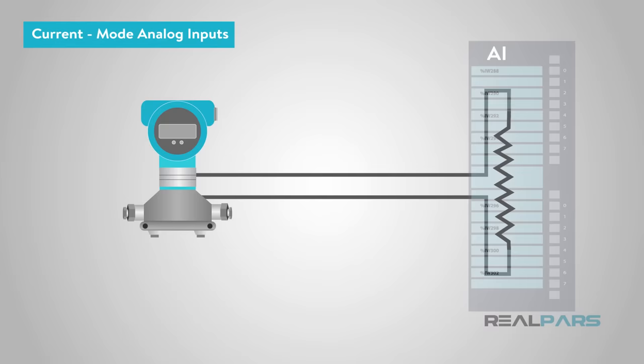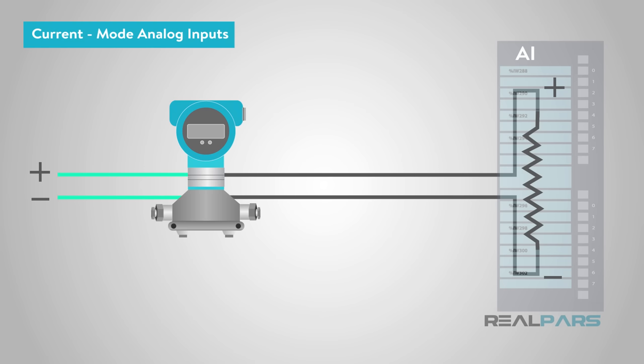This is an example of a device-powered current source. The field device is getting its power from another source. The current signal is sourced from the positive terminal on the measuring device, traveling to the positive terminal of the PLC. Since there is a limit to how much voltage is available in the loop, we will usually limit the overall resistance on the measuring end of the loop to 500 ohms. Often this is called out as part of the field device installation instructions.